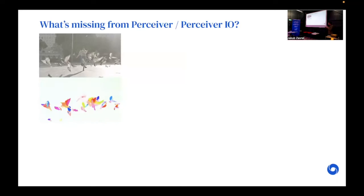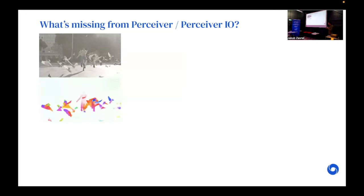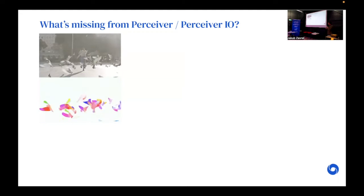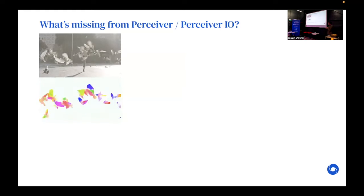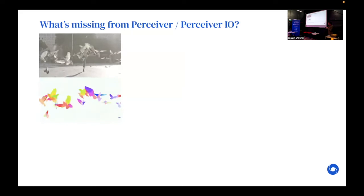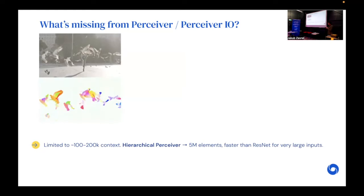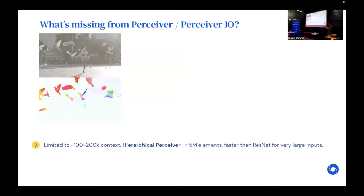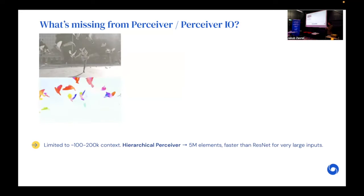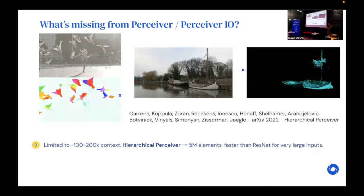We've been trying to incrementally push these architectures to work on all sorts of domains. To do this we really need to identify what's missing from these architectures, and there are two things I think that are missing. One is that the Perceiver IO architecture works well up to about one hundred or two hundred thousand points, so this works on medium resolution images but it won't work very well on very high resolution images. To address this we developed the hierarchical Perceiver which incorporates some ideas from the SWIN transformer to allow us to apply it to very large inputs, like megapixel image segmentation problems.